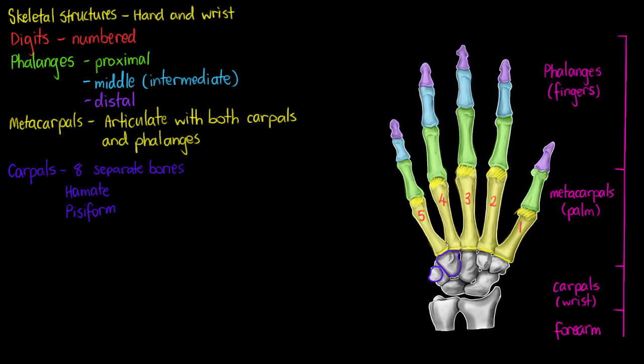That pisiform bone is going to be on the anterior side underneath our next bone, which is the triquetral. The triquetral I'll outline here. That's on the posterior. We can see it kind of overlaps the pisiform.